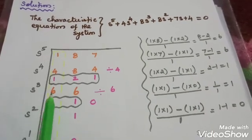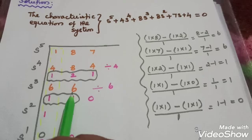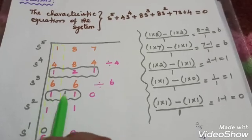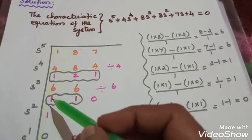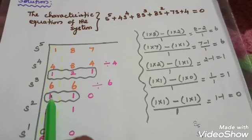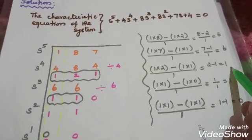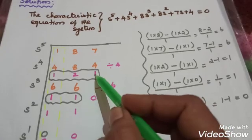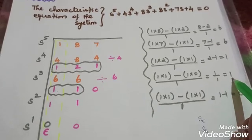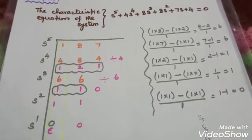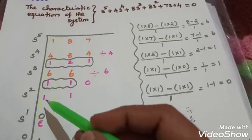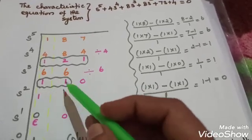So this is the S³ row with values including 6. Now, 1 into 2 minus 1 into 1 divided by 1. And 1 into 1 minus 1 into 0 divided by 1. So 1 minus 1 is 0.